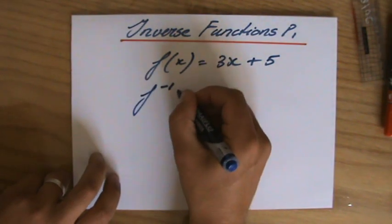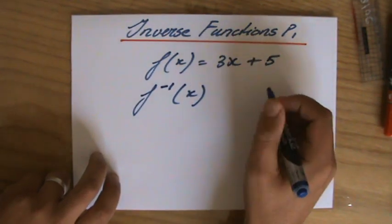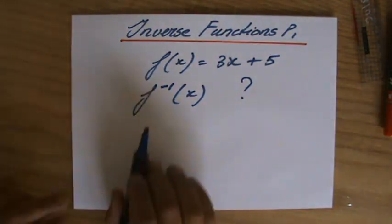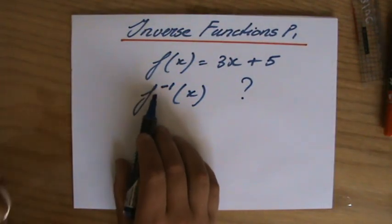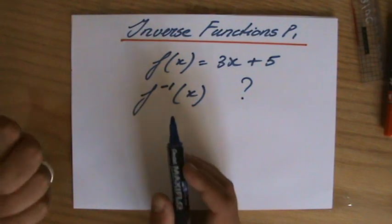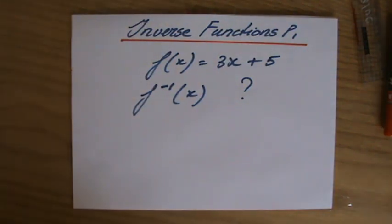And then the question is, what is the inverse function of x? That's the notation f to the power minus one of x, which means an inverse function of x.